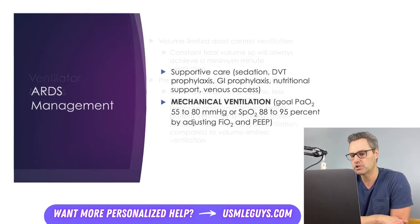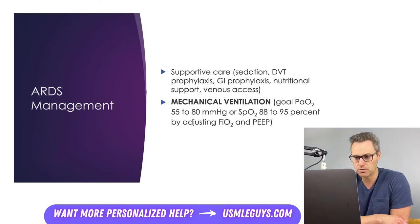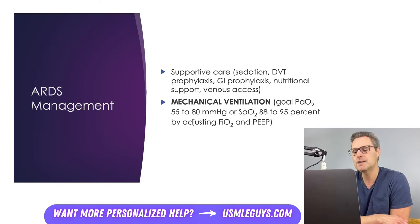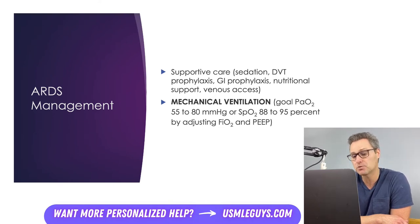For the vast majority of patients with ARDS, you should immediately proceed to invasive mechanical ventilation. You're going to adjust the FiO2 and PEEP to achieve the desired oxygenation goal. The main concern with ARDS is oxygenation. Increasing the fraction of inspired oxygen, FiO2, helps with oxygenation, and PEEP also helps by preventing alveolar collapse upon expiration.